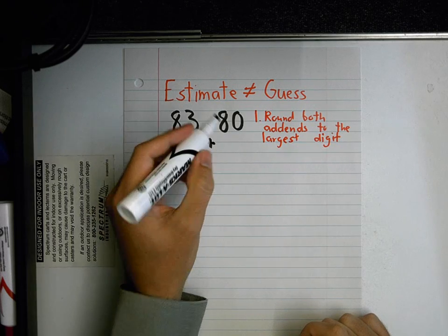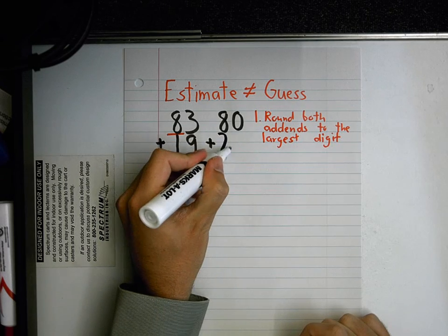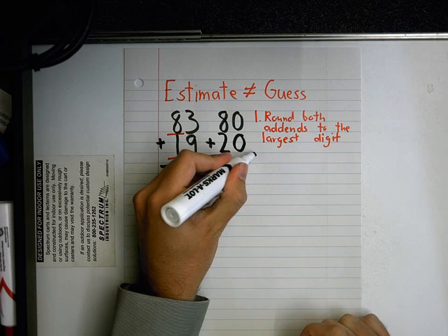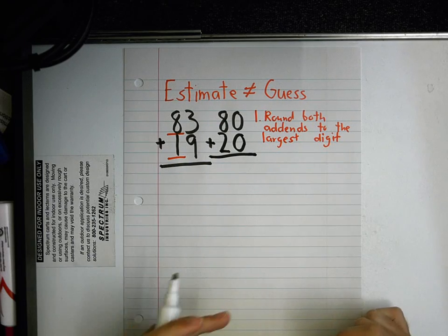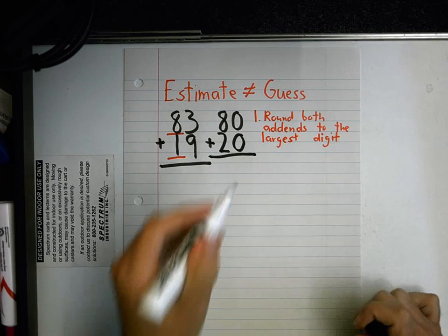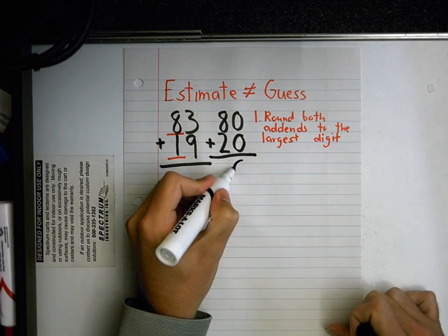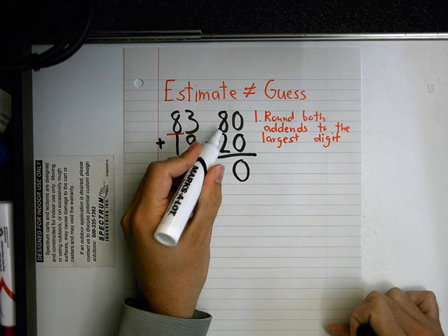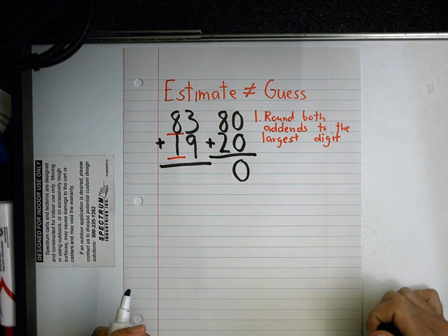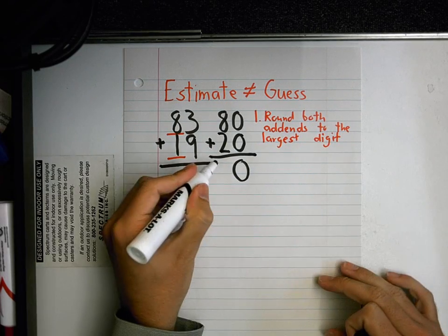So can I add 80 plus 20 now? Okay, so zero plus zero is zero. What's eight tens and two tens? What am I gonna have, Marina? 10. Yeah, so that's 100.